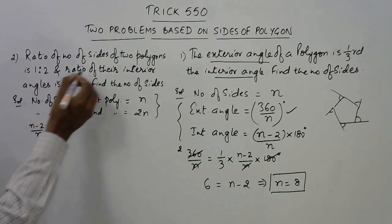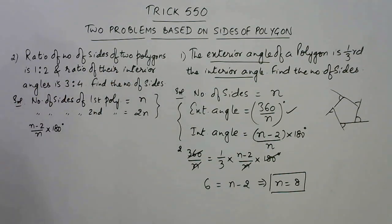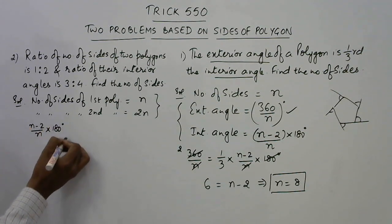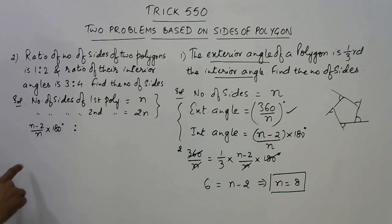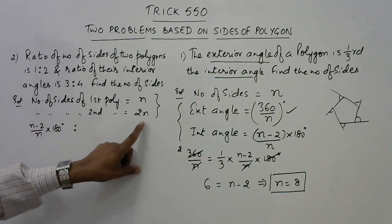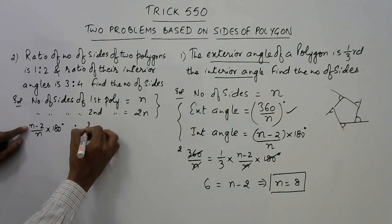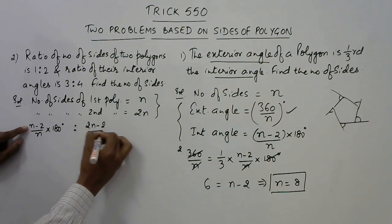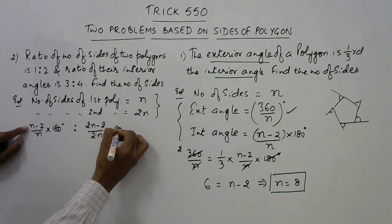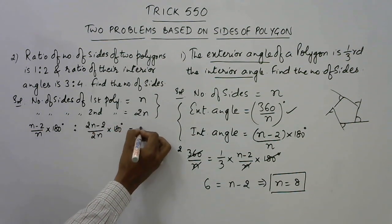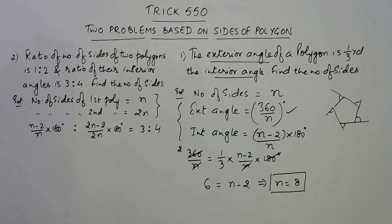So the ratio of the interior angles—the first interior angle, the second interior angle, that is when the number of sides of the polygon is 2n, then this will become (2n minus 2) upon 2n into 180. This ratio is given as 3:4, and now we need to find the number of sides of this polygon. So let us see how we can solve this to get to our final answer.